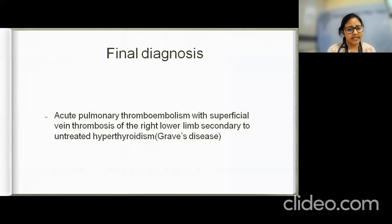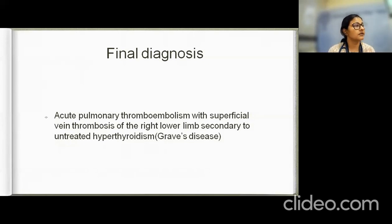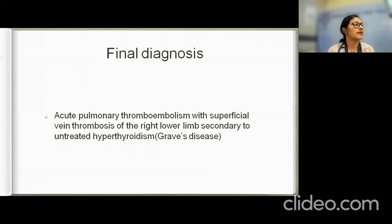The final diagnosis was acute pulmonary thromboembolism with superficial vein thrombosis of the left lower limb, secondary to untreated hyperthyroidism. Notably, during her prior admission for head trauma, TSH was also less than 0.003 and was left untreated at that time.